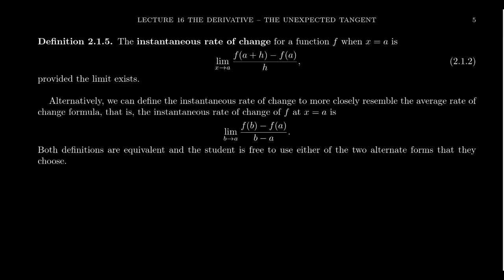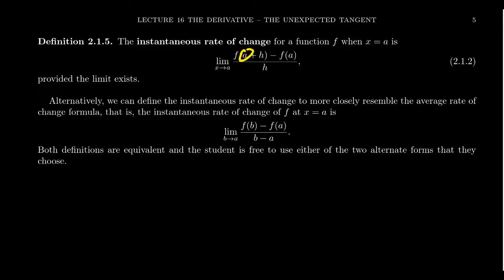In summary, the instantaneous rate of change of a function f when x = a is the limit as H approaches zero of [f(a + H) minus f(a)] all over H. Here, a is our target value — we want to get close to x = a, but we can't just plug it in because we get zero over zero. Instead we take a small perturbation H — a little bit to the right or left of a — and use this formula.